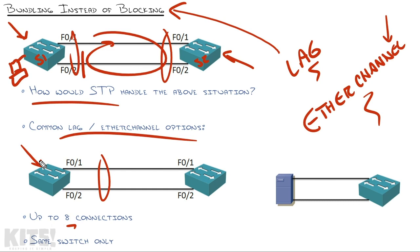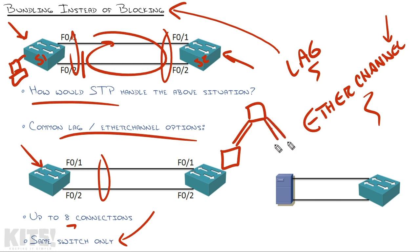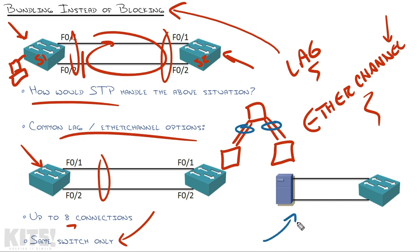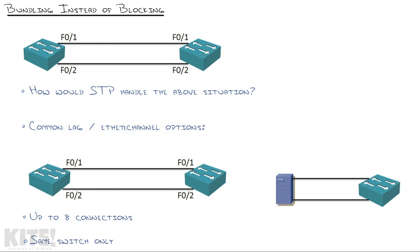LAG actually allows you to bundle up to eight connections between your switches, and the great thing is it uses load balancing within the hardware of the switch, so it doesn't slow anything down. This is between the same switch only. In a scenario where one switch at the top connects via a couple of cables to two different downstream switches, LAG doesn't mean bundling all four cables — you'd create two separate bundles of two. LAG has also gone beyond the switch world; servers now support this technology so you can bundle multiple cables to give a server more bandwidth potential.